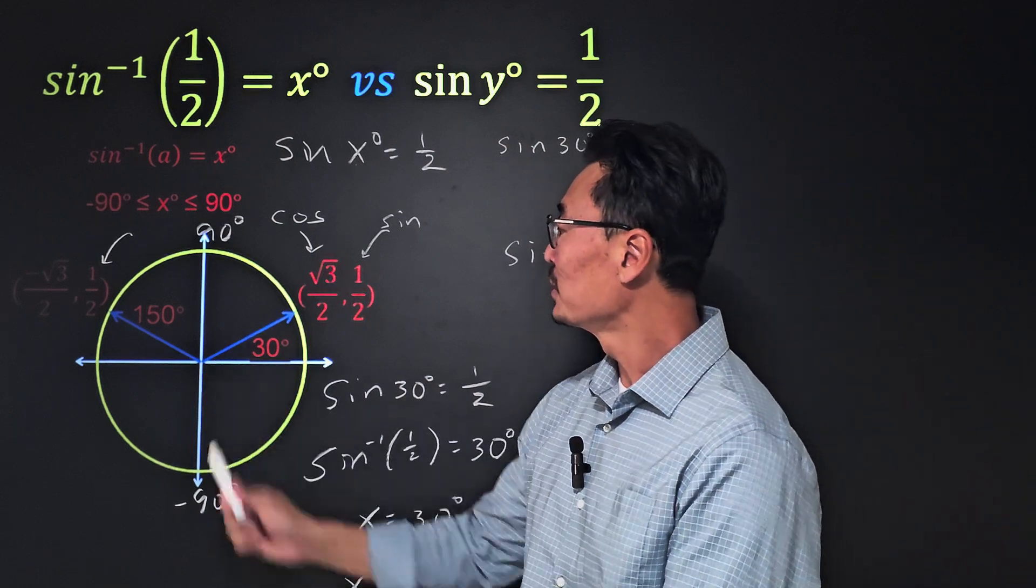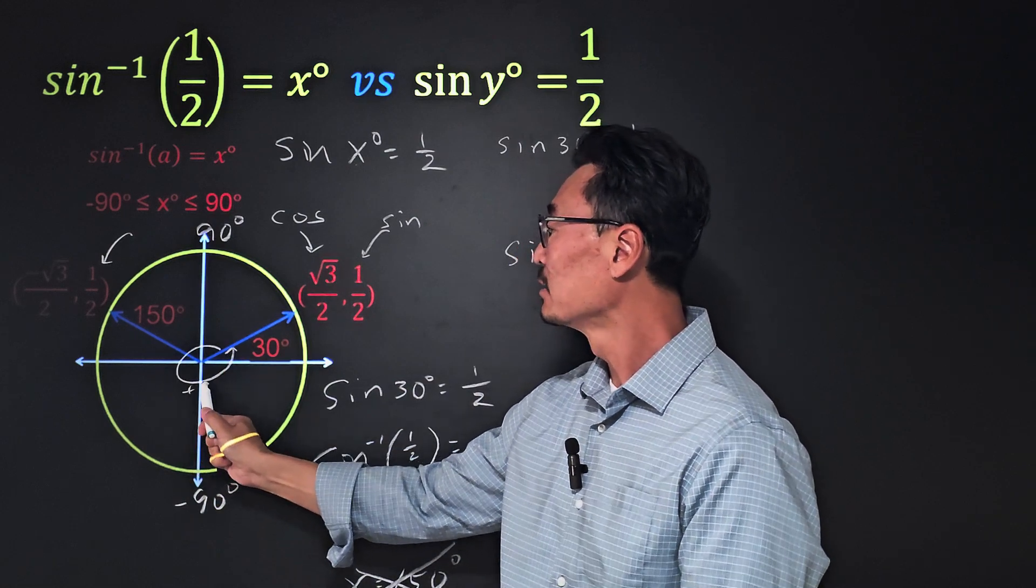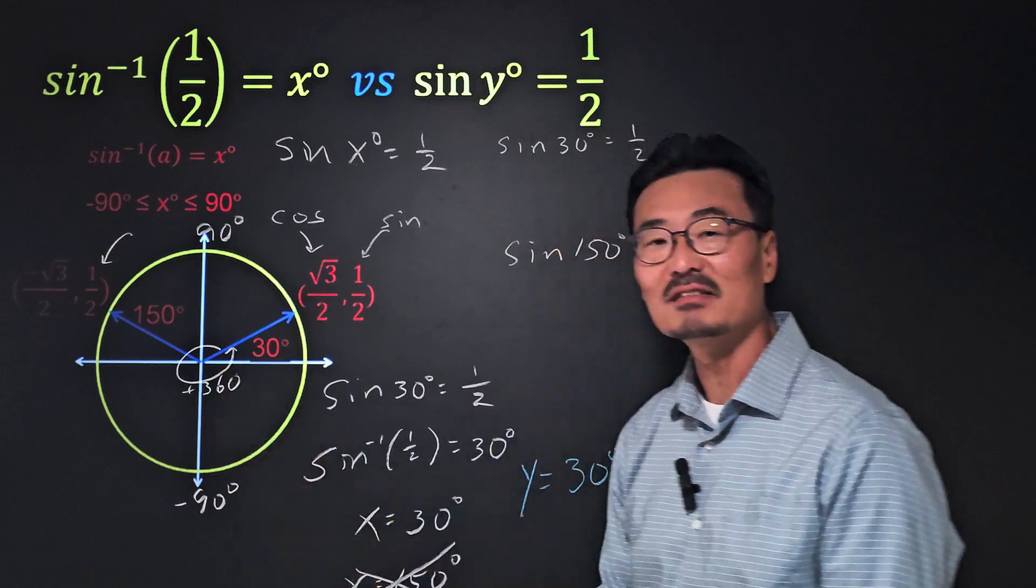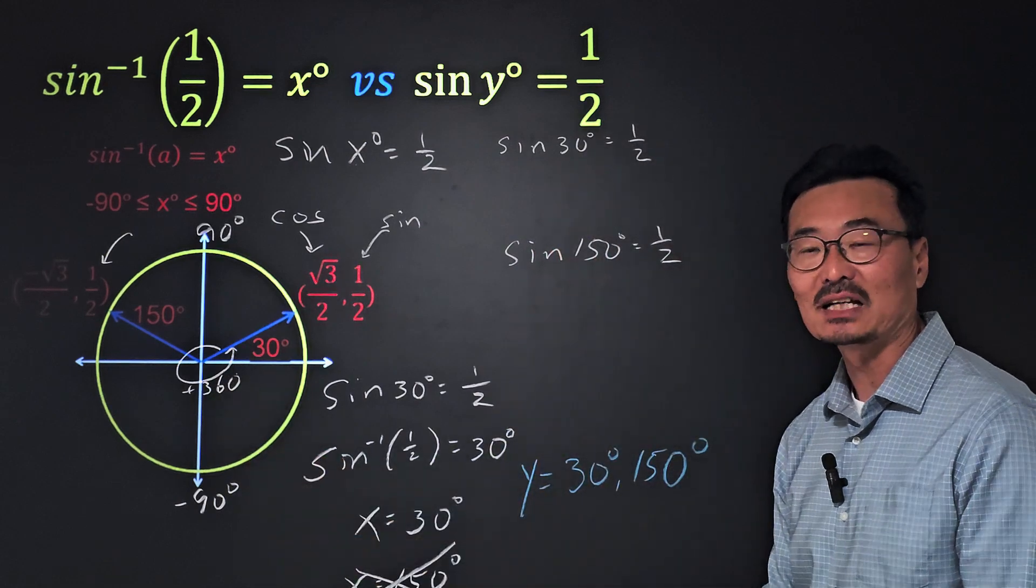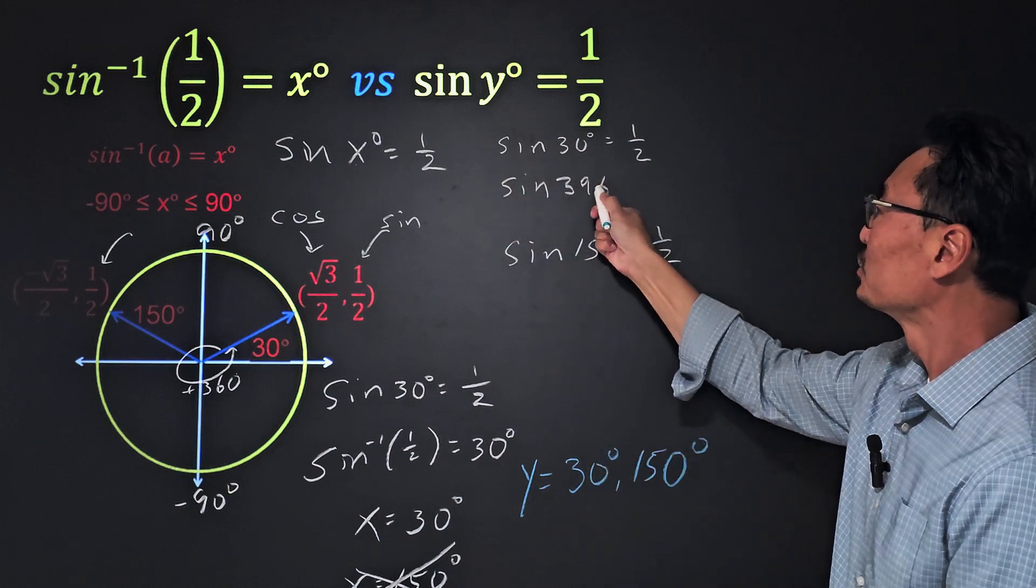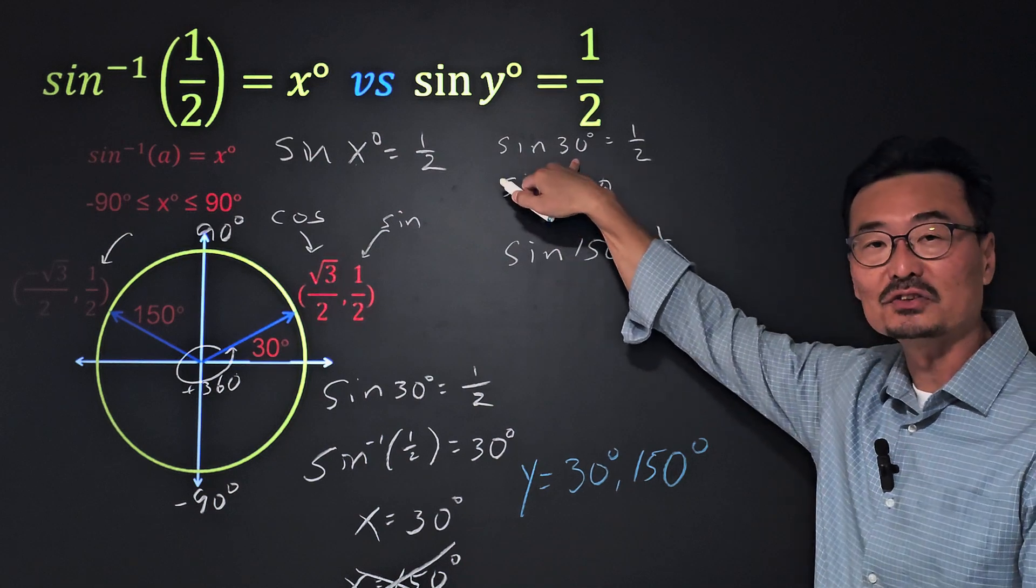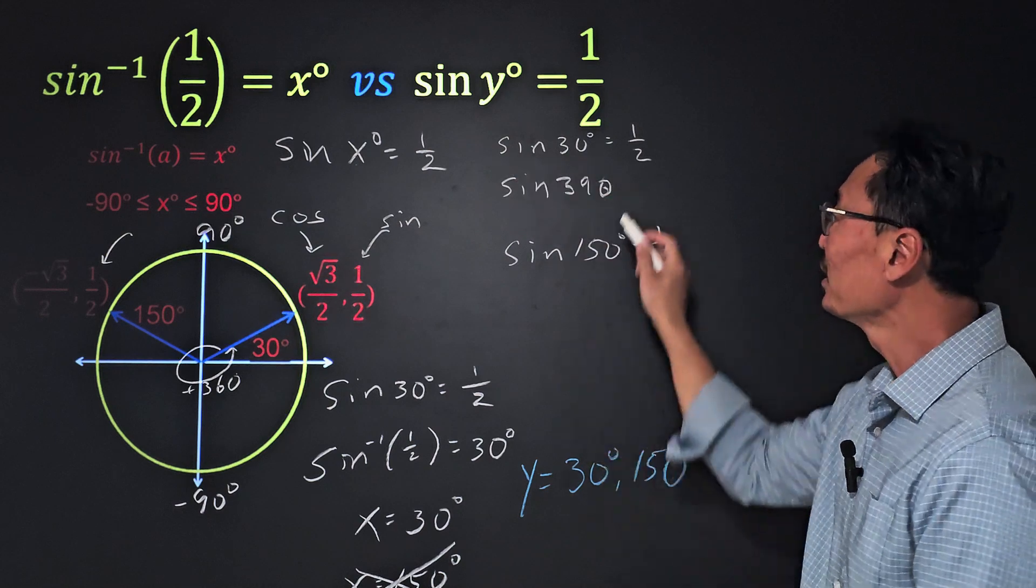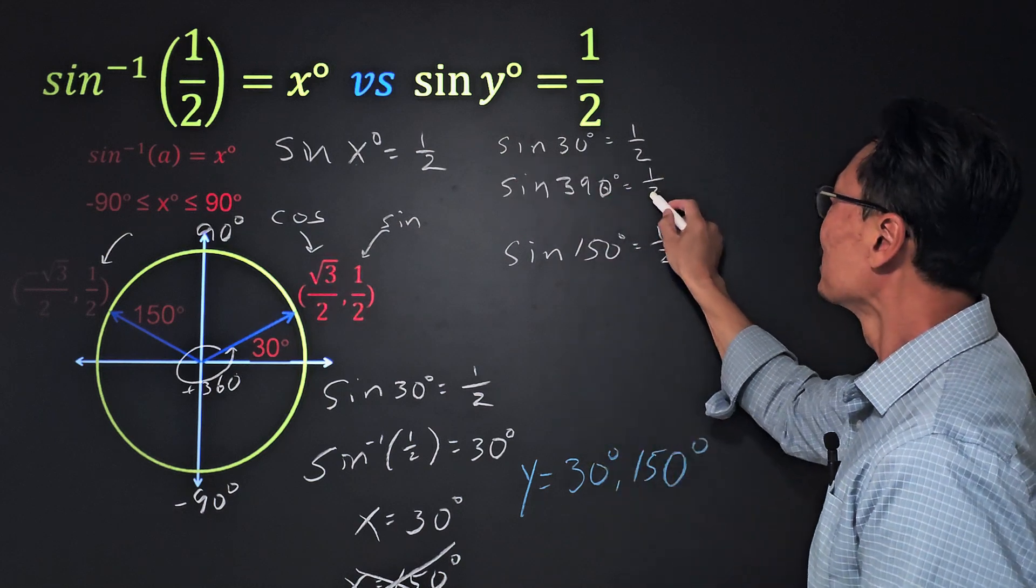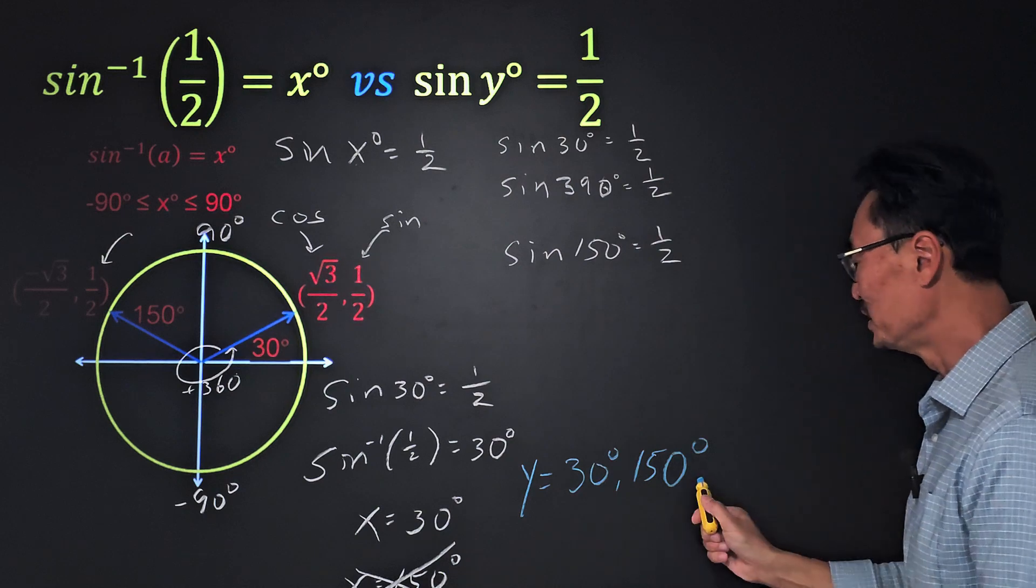However, we're not finished. Here's the reason why. We continue from the 30 degrees here and come all the way around, meaning adding 360 degrees. We end up at 390 degrees. So if I take sine of 390 degrees, again, if we add 360 to the 30 degrees that we started with, we end up with a sine value of one-half again.